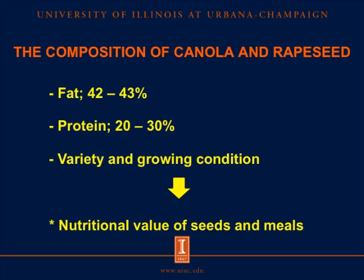For the composition of canola and rapeseed, the seeds themselves contain fats ranging from 42 to 43 percent and crude protein ranging from 20 to 30 percent, depending on the variety and growing conditions in different regions around the world. These differences could affect nutritional values of the seed and consequently affect the nutritional values in meals.